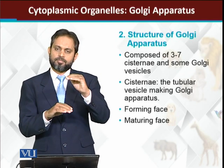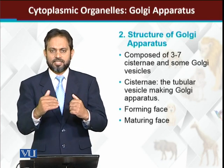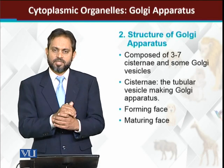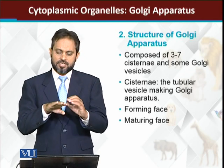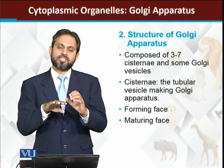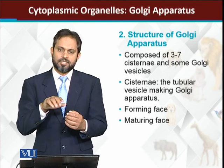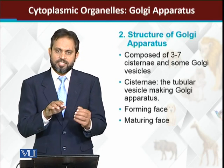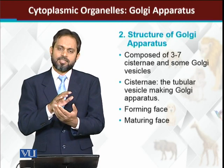The cisternae are flattened sacs that pile up on one side. Looking at the Golgi apparatus, one side is towards the nucleus and the other side is away from the nucleus. There are some cisternae which are old and oriented towards the nucleus, while the other side faces the cell membrane. The side near the nucleus is the forming phase — this is where new cisternae are born.